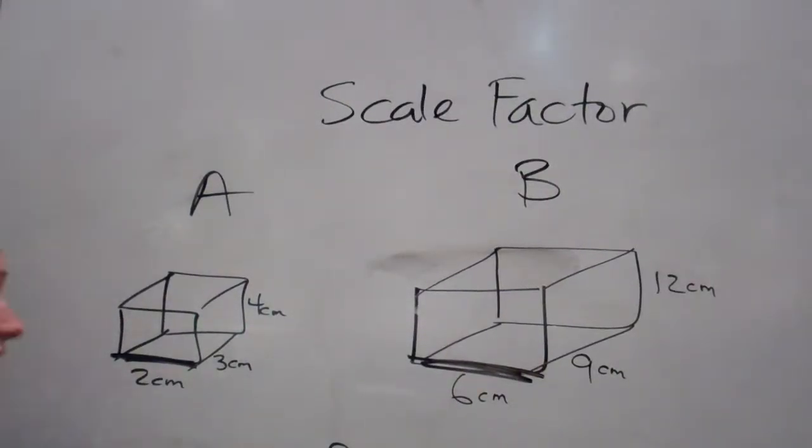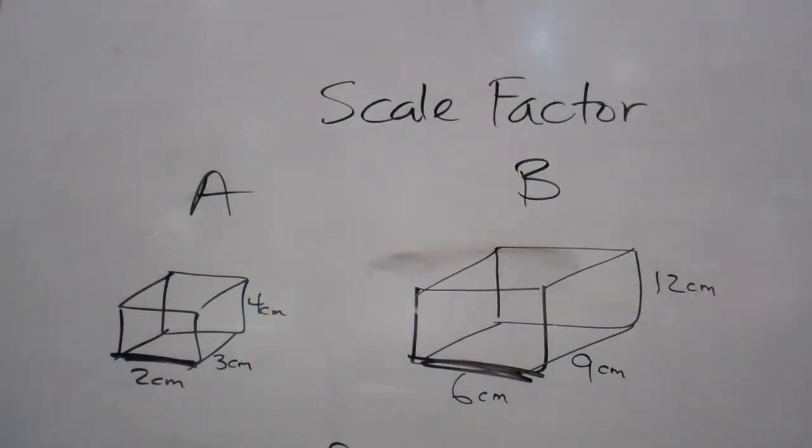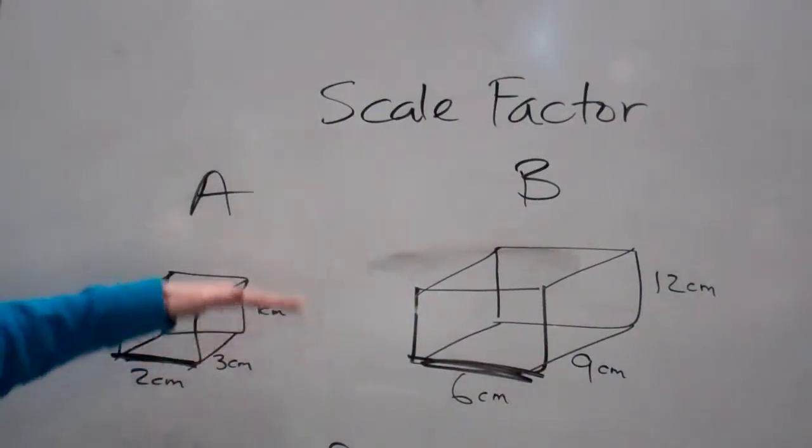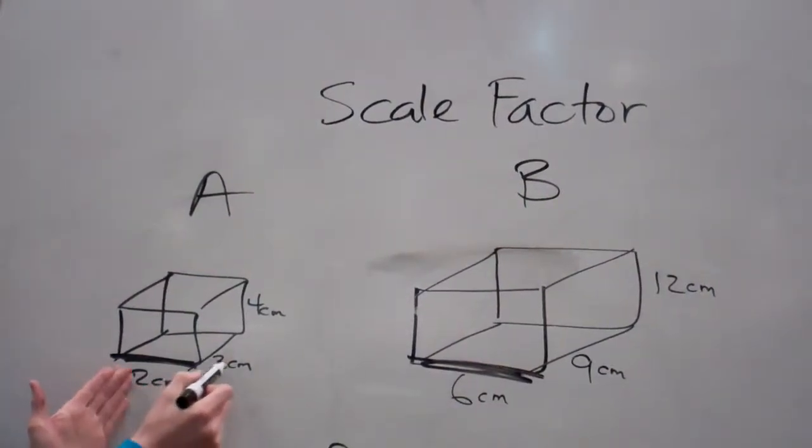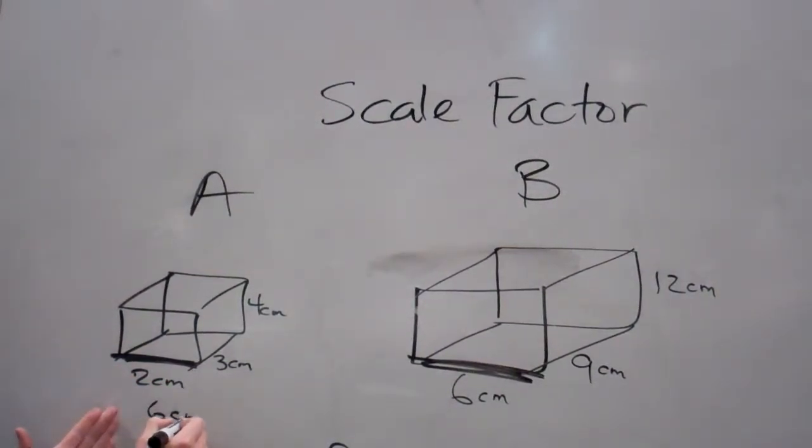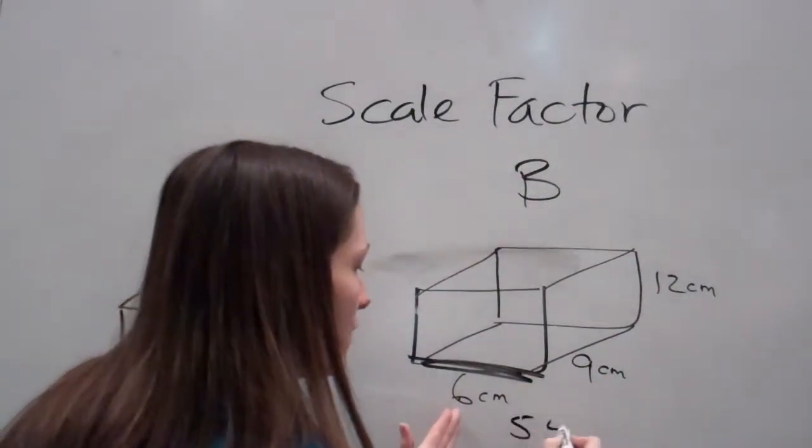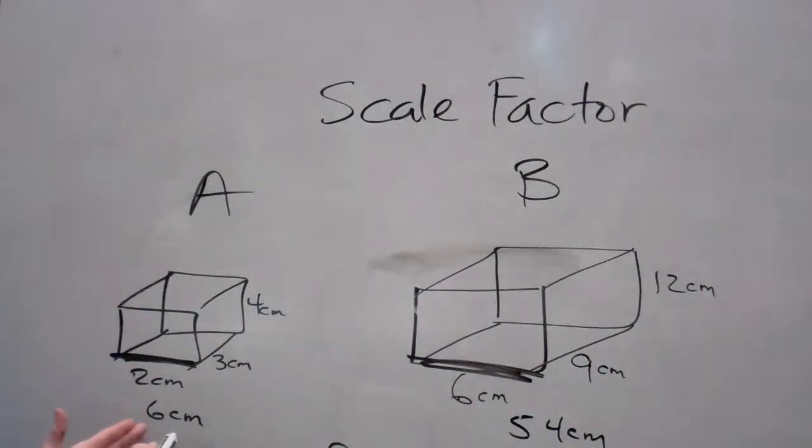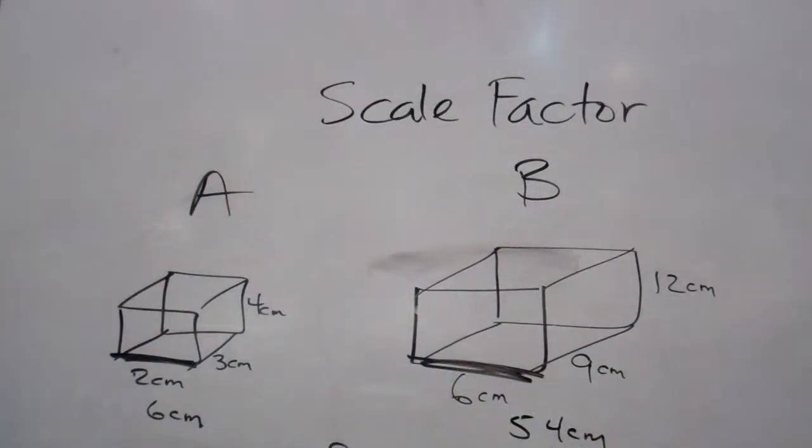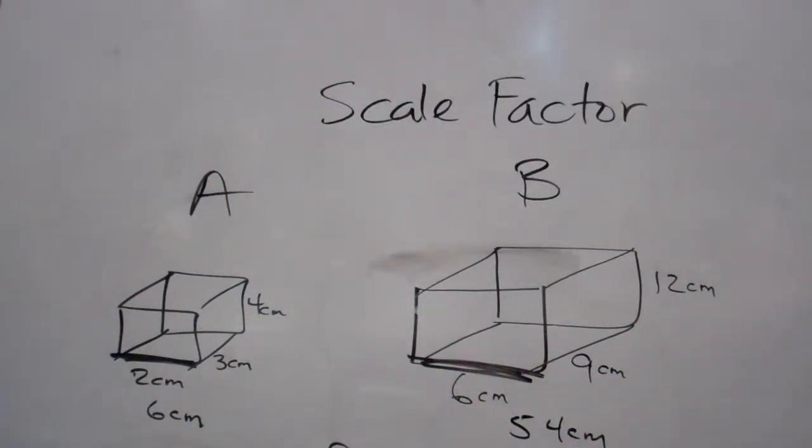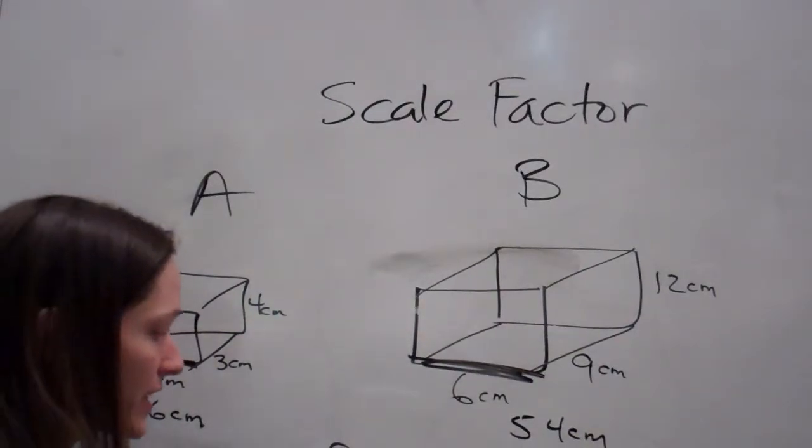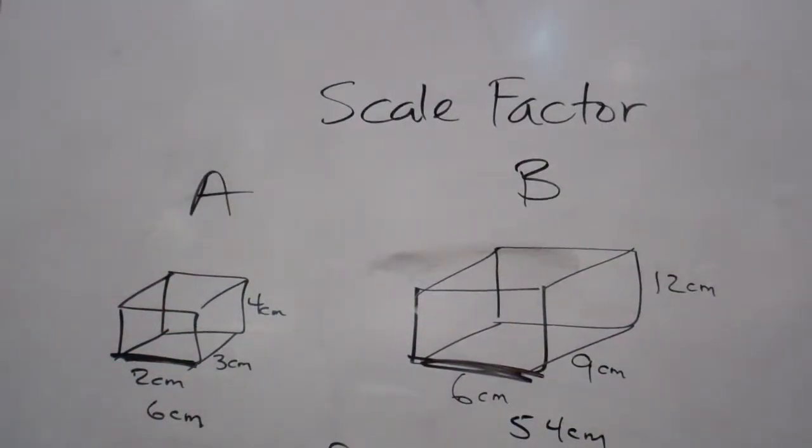Scale factor is three. Now, listen to this. What is my area scale factor? Stay with me. What is area? The length times width. So, I'm not even worried about height yet, right? So, two times three is six centimeters. Six times nine is 54 centimeters. How much did it go up from six centimeters to 54 centimeters? Nine. So, my area scale factor is nine. Everybody understand how I got that? You may have to watch this video again. I'm having to move really quick.